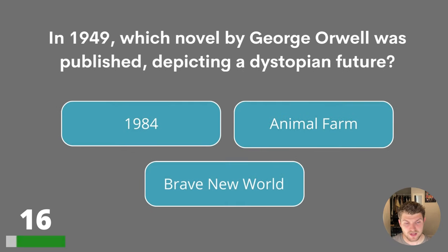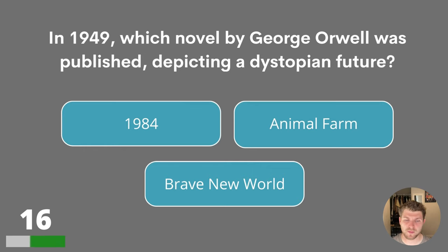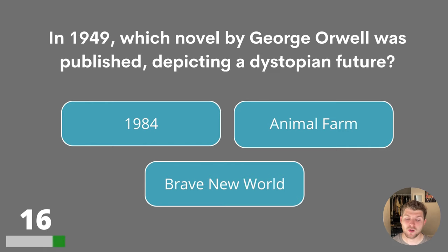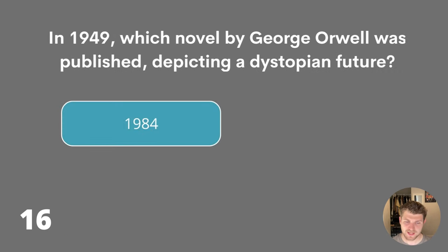Question sixteen. In 1949, which novel by George Orwell was published depicting a dystopian future? Nineteen Eighty-Four, Animal Farm or Brave New World? The answer is Nineteen Eighty-Four.